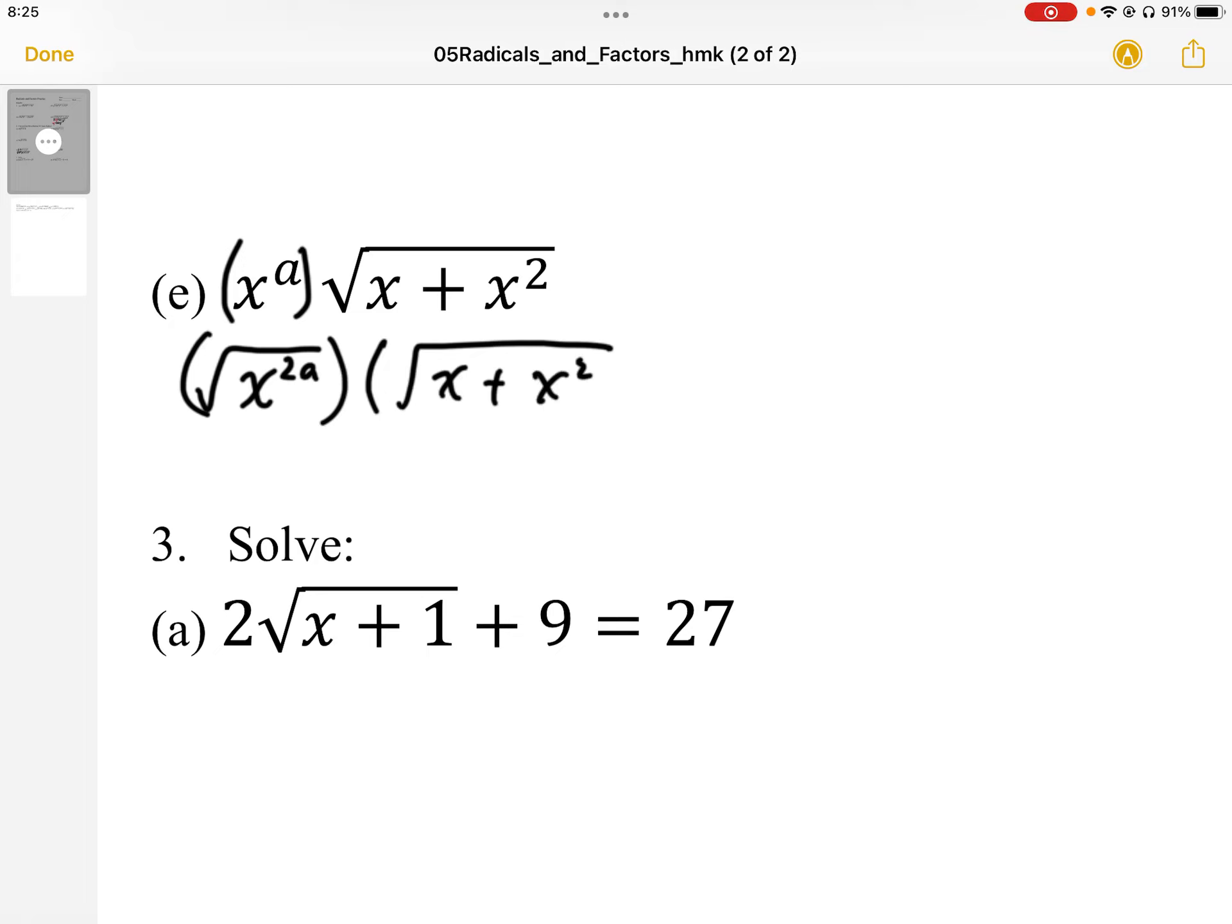Once we do that, we can multiply, distribute that into the radical, and so we end up with square root x^(2a+1) plus x^(2a+2).